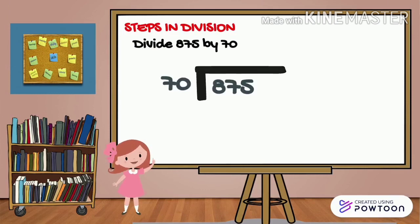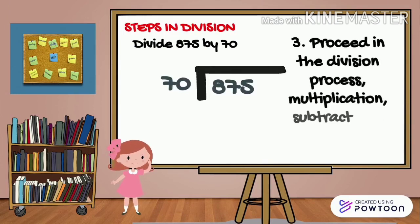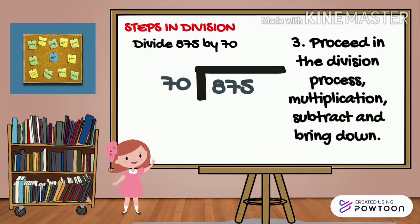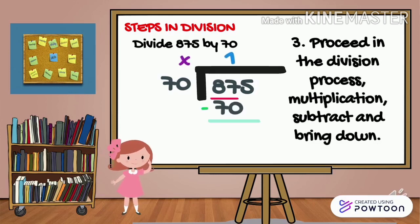Step 3 is proceed in the division process. Multiplication, subtract, and bring down. So 87 divided by 70. So 87 divided by 70 is 1. Then multiply by 70. The answer is 70. Then subtract. The answer is 17. Then bring down 5.